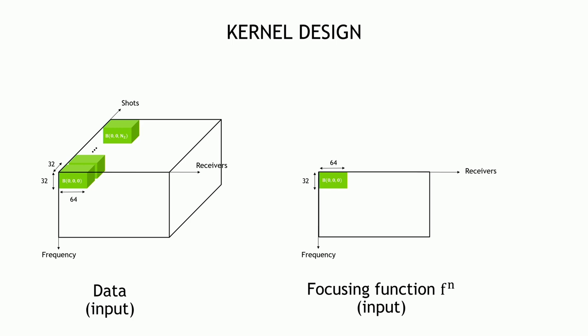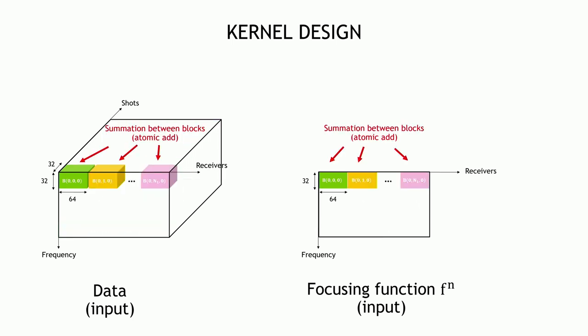Zooming back out to the full computational grid: all thread blocks of the same color work with the same portion of the input array. The grid is decomposed into thread blocks accordingly. To sum contributions across receivers — between different thread blocks — we use atomic adds. Once complete for a given batch of shots and one focusing point, the Marchenko integral for that batch is done. Note that in practice there are far more receivers than frequencies, so the array dimensions are not to scale in the diagram.